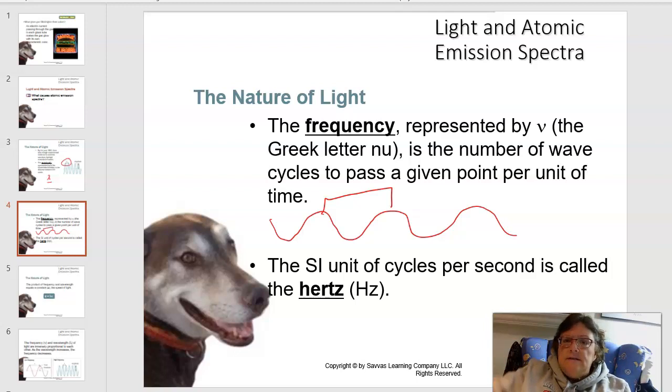Frequency is the number of wavelengths that go past a given point in an amount of time. So frequency, we use the Greek letter nu, which is kind of a little V that's being blown by the wind. It's a cycle, so it's the number of waves per amount of time. The one we use is Hertz. Hertz is equal to 1 over S, meaning waves per second.